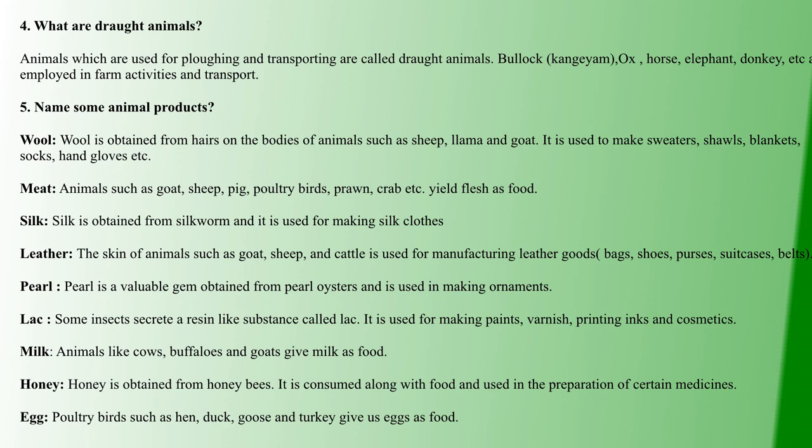Fourth question: what are drought animals? Drought animals are used for plowing and transporting. Examples include bullock, ox, horse, elephant, and donkey — all used for plowing and transportation purposes.